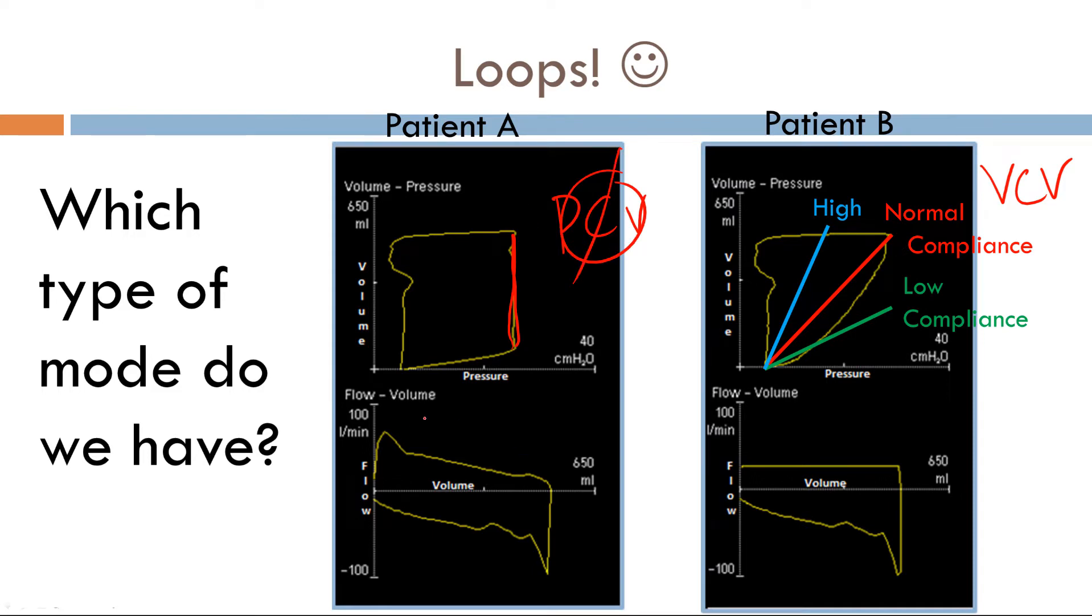Now, let's look at the flow volume loop. This is inspiration here. This is expiration here. Now, if you want to take this image and rotate it 180 degrees with exhalation on top and inspiration on bottom, it would actually be a poor man's PFT. So, let's take a look.